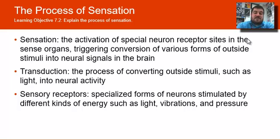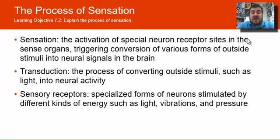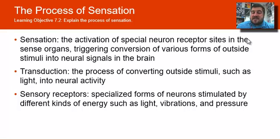Sensory receptors are specialized forms of neurons stimulated by different kinds of energy, like light, vibrations, and pressure. In your eye, the retina on the back of your eye contains sensory receptors for light. You have fluid in your ear that gets vibrated, triggering neurons that send electric signals to your brain for hearing. Your touch sense and taste sense neurons on your tongue are all specialized forms of neurons to help you interpret incoming sensations.